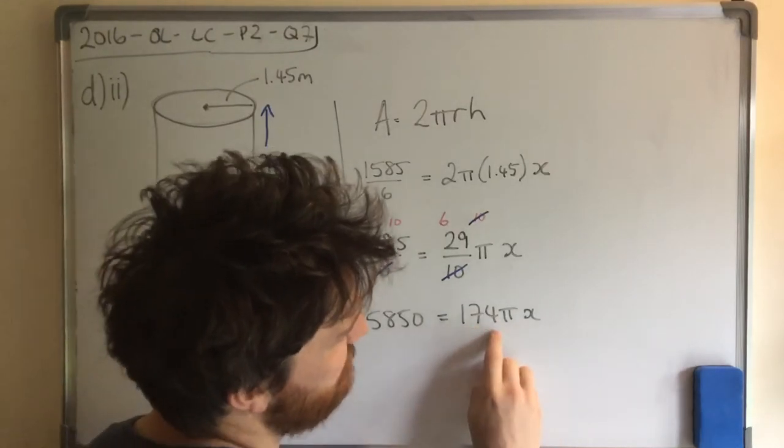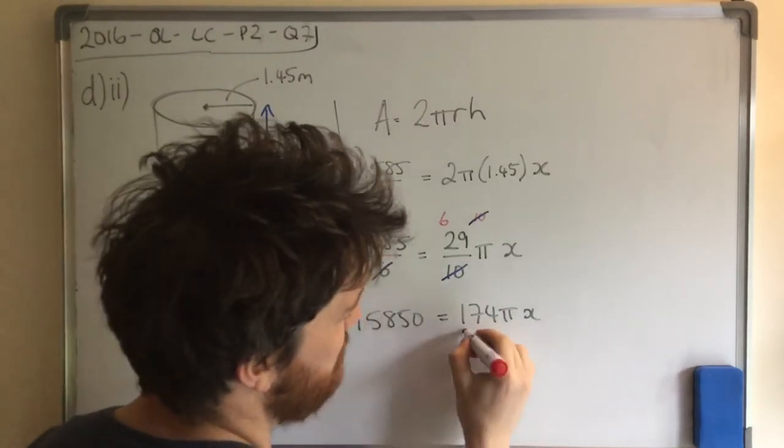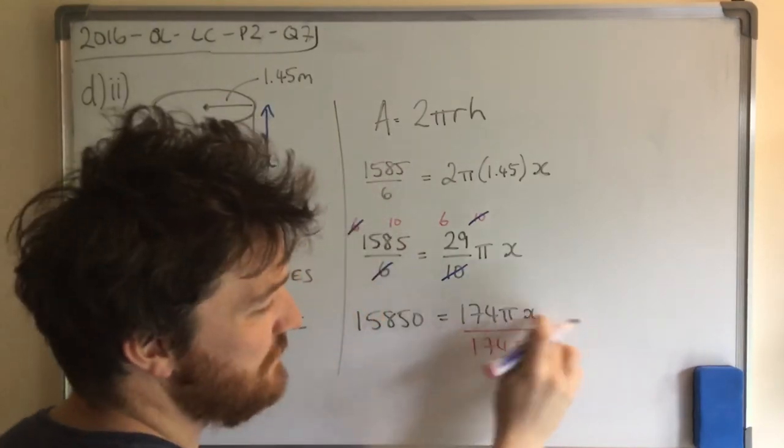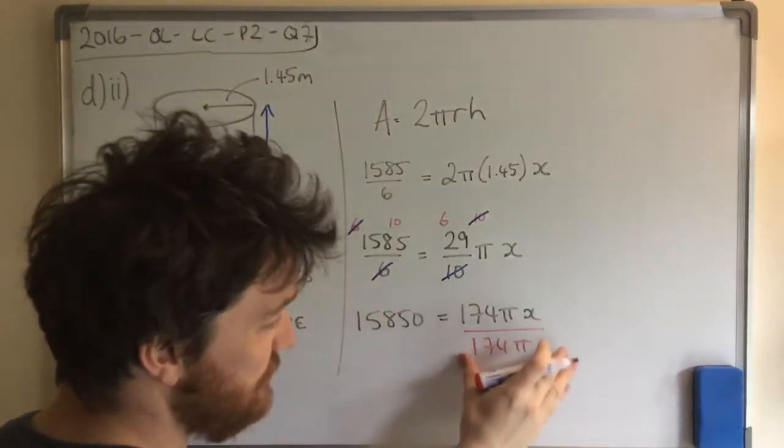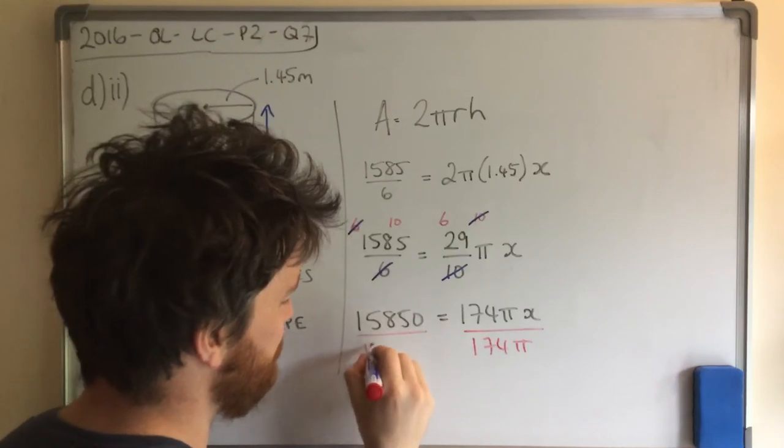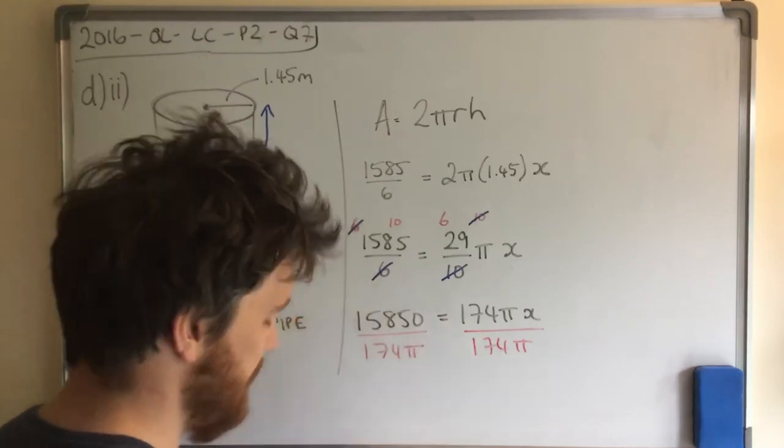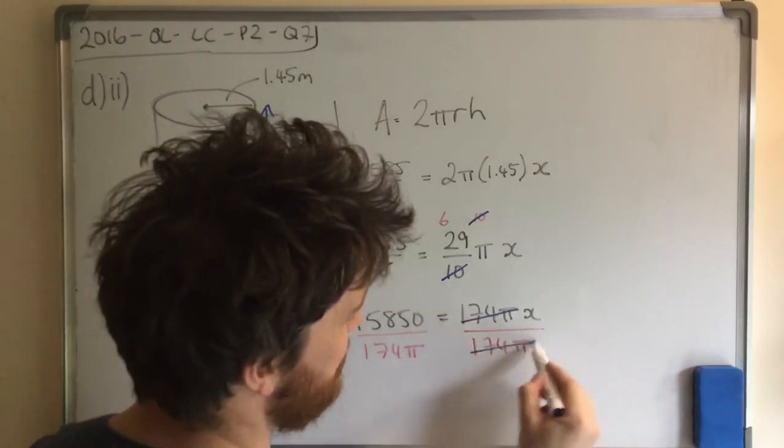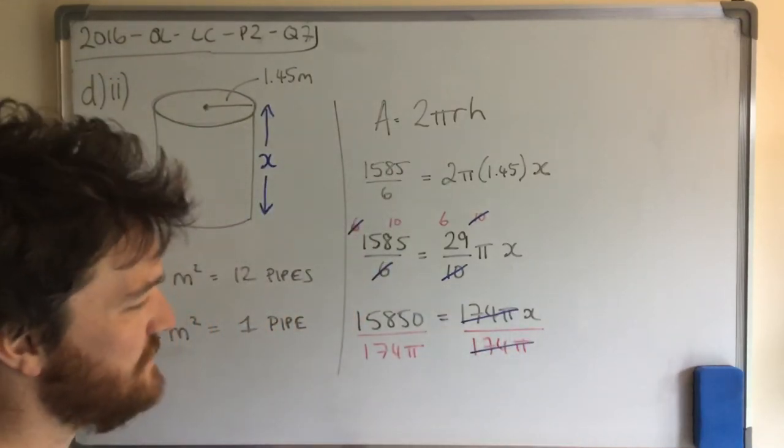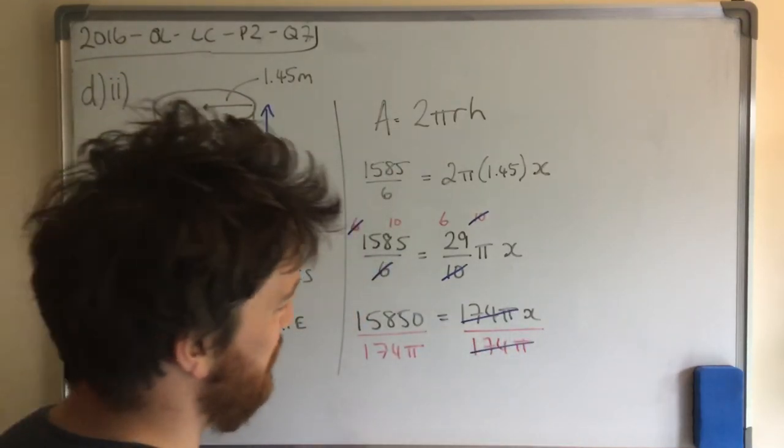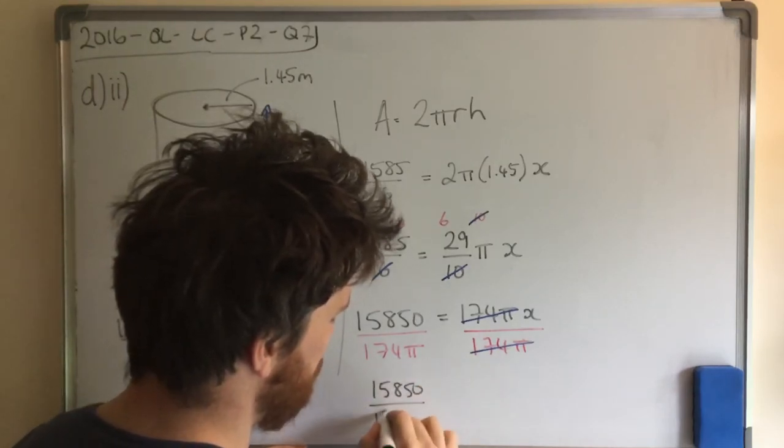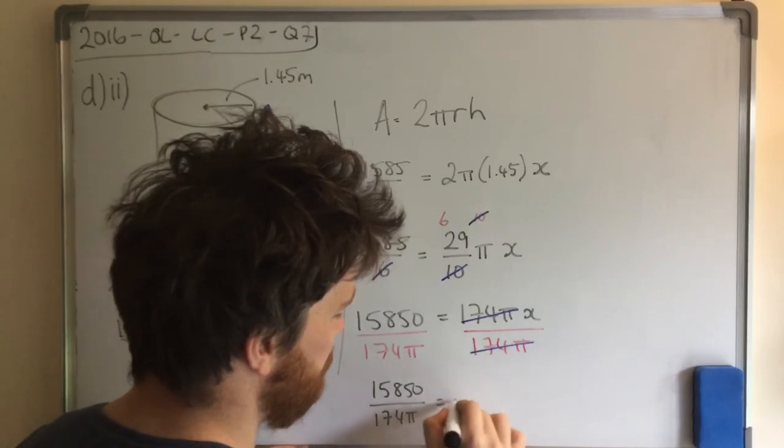How do I get rid of 174π here with the x? I'm going to divide by 174π. It's multiplying with the x, so I'm dividing. But if I do it on the right, I have to also do it on the left. And again, we get the same idea. This guy cancels with this guy. And that leaves us with 15850 divided by 174π equals my x.